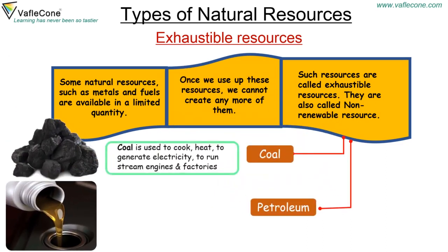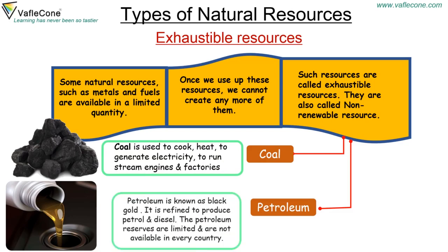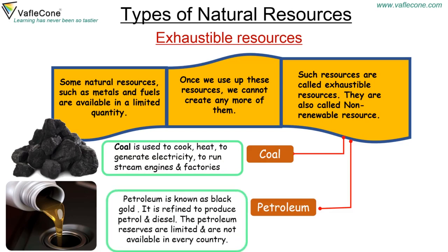For example, coal and petroleum. Coal is used to cook, generate heat and electricity, and run steam engines and factories. Petroleum is known as black gold. It is refined to produce petrol and diesel. Petroleum reserves are limited and are not available in every country.